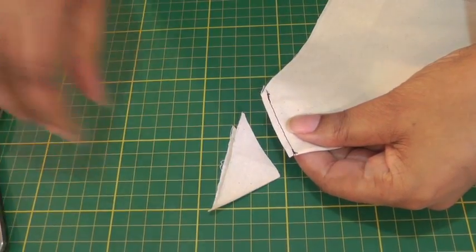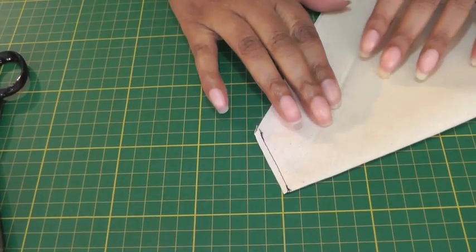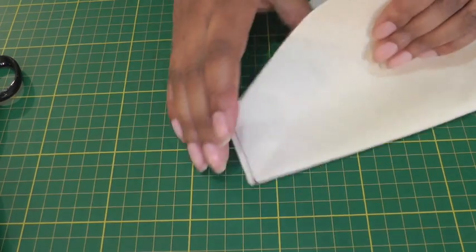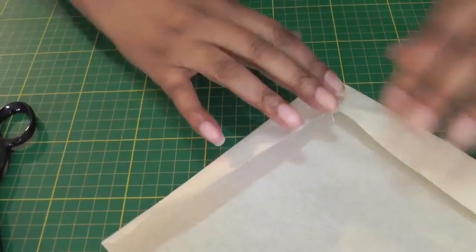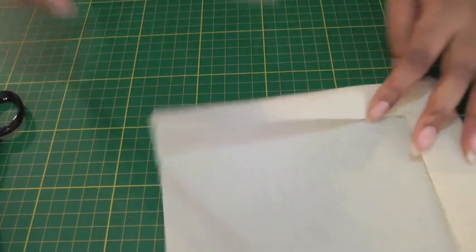So this is what we want to get rid of and I'm working on the wrong side. I'm now going to be pulling that through and here is your mitered corner.